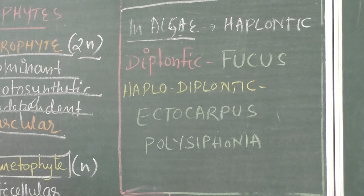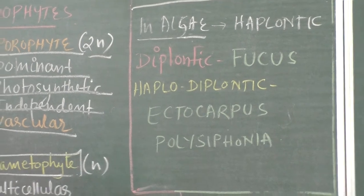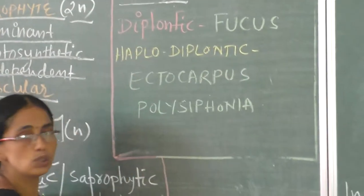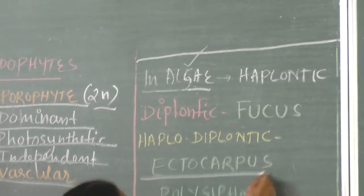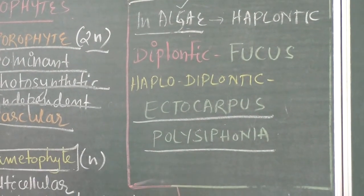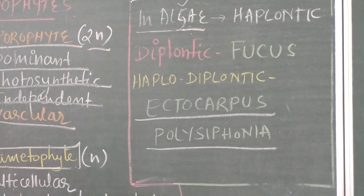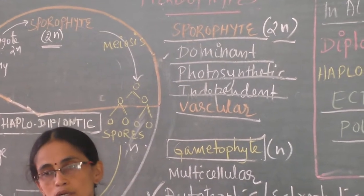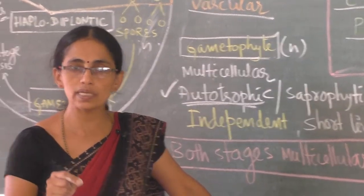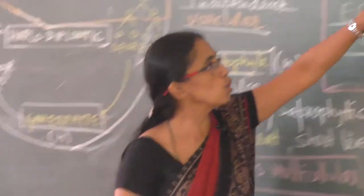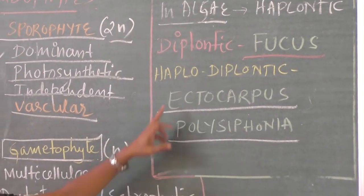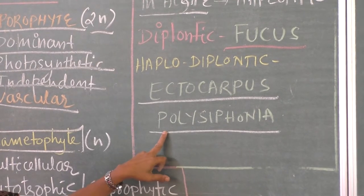The haplodiplontic life cycle is also seen in some algae — specifically Ectocarpus and Polysiphonia. So in summary: Spirogyra, Volvox, and Chlamydomonas show haplontic; Fucus shows diplontic; and Ectocarpus and Polysiphonia show haplodiplontic life cycles.